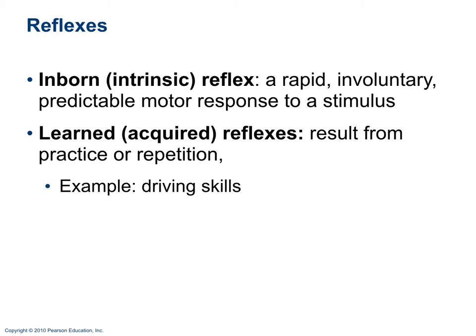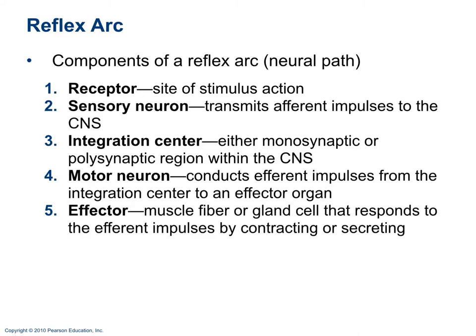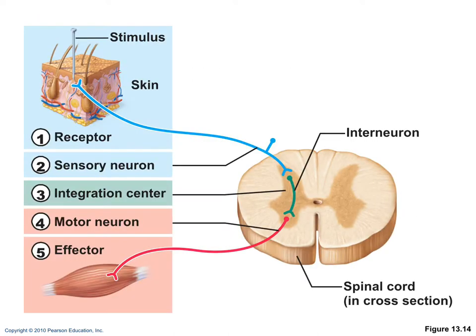Inborn reflexes, called intrinsic reflexes, are rapid, involuntary motor responses to a stimulus. Acquired or learned reflexes result from practice or repetition — examples include driving or martial arts. The reflex arc has five components: a receptor that picks up the stimulus, a sensory (afferent) neuron, an integration center in the spinal cord, a motor neuron sending the response, and an effector — a muscle or gland.